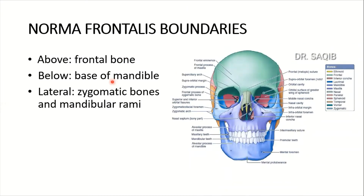What are the boundaries of the Norma Frontalis? So look at the image. Above is the frontal bone, below is the base of the mandible, and on the lateral side are the zygomatic bones and the mandibular rami. These are the body of the mandible and these are the rami. So these are the boundaries of the Norma Frontalis.